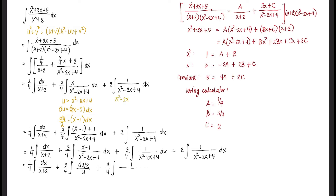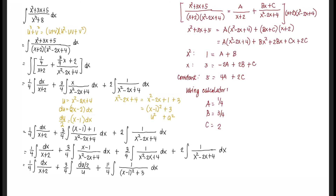To handle the remaining quadratic denominator, we complete the square: x squared minus 2x plus 4 equals x squared minus 2x plus 1 plus 3, which equals x minus 1 quantity squared plus 3. This is now in the form u squared plus a squared, where a equals square root of 3, which is directly integrable using the inverse tangent formula.